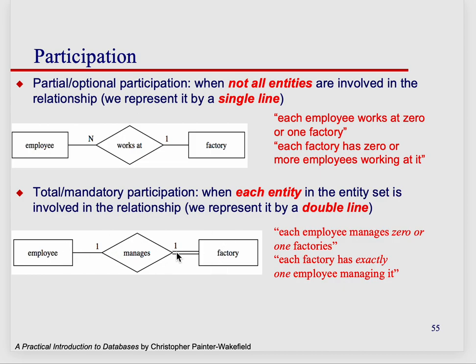But if we read it in reverse, because of these double lines, we have to read it a little differently. Each factory has exactly one employee managing it. They can't have zero. So if you're designing your database and you want to ensure there is always an employee managing a factory — it's never going to be zero — you put these double lines here. These double lines depict that the relationship is now read as exactly one.